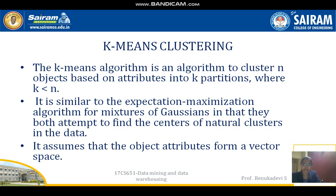The centroid of each cluster is updated based on the points assigned to it. This assignment and update procedure is repeated until the cluster assignments no longer change, or equivalently until the centroids remain the same. The K-means algorithm clusters objects based on attributes into K partitions, where K is less than N. It is similar to the expectation-maximization algorithm for mixtures of Gaussians, in that both attempt to find the centers of natural clusters in the data, and it assumes that the object attributes form a vector space.